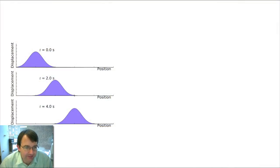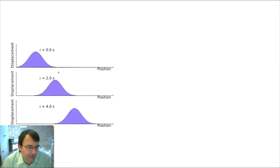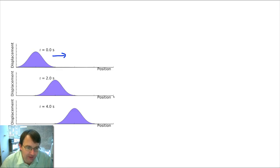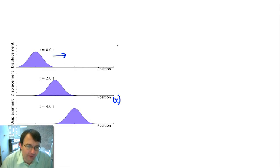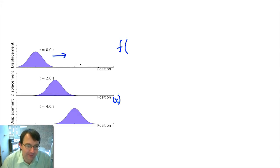What we want to do now is develop a mathematical description for waves. Let's have a look at an example wave — a pulse on a string moving in this direction, so that as time goes by the wave has moved to a larger value of position, which we'll label x. Let's say this displacement is described by some function, which we'll call f. Clearly the displacement is going to be a function of position because the displacement here is different than the displacement here and here.